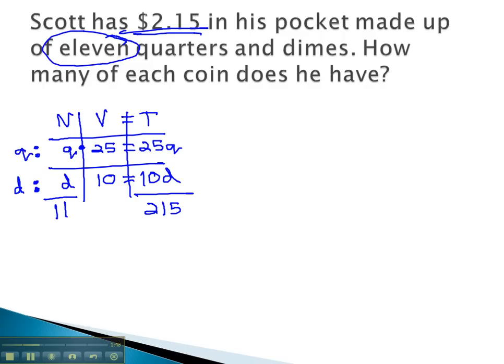To get our equations to solve, we'll use the last column like before: 25q plus 10d equals 215, but we will also use now the first column. Adding the number of quarters and dimes will give us the total of 11. Quarters plus dimes equals 11. This gives us a system with two variables, which we know how to solve.